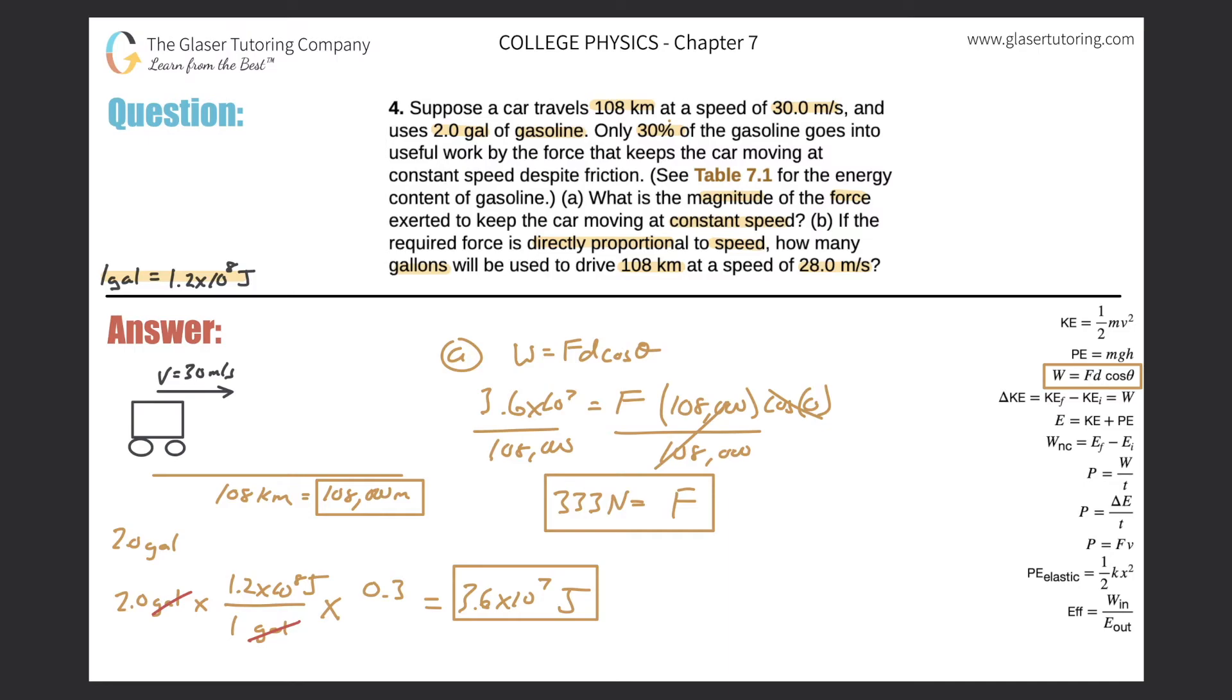So let's frame it this way. Remember that two gallons, 2.0 gallons, try to get you to travel at 30 meters per second. And now we want to travel at 28 meters per second. And we're trying to figure out how many gallons that would require. And remember, they just told us that this all was directly proportional to one another. So I can set up a proportion. Just be consistent.